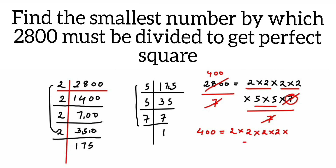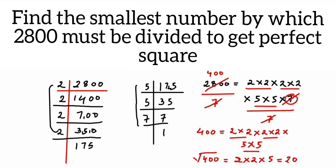400 equals 2 × 2 × 2 × 2 × 5 × 5. You can see every factor now has an exact pair, which means 400 is a perfect square. The square root of 400 is found by taking one factor from each pair: one 2 from the first pair, one 2 from the second pair, and one 5 — multiply to get 2 × 2 × 5 = 20.